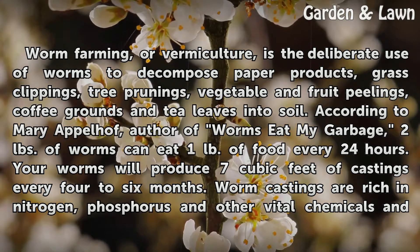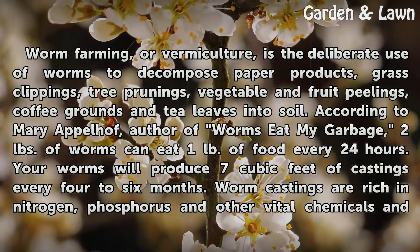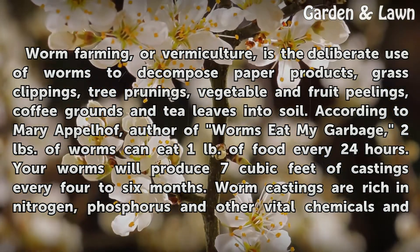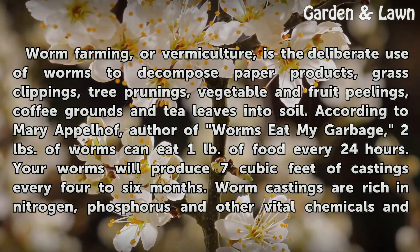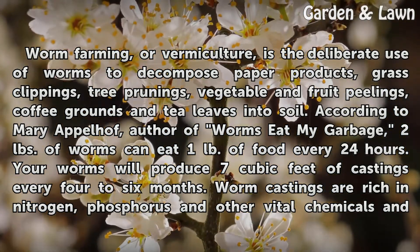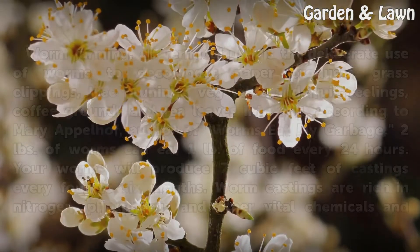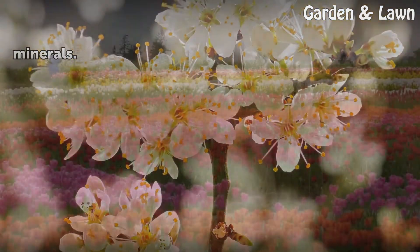Your worms will produce seven cubic feet of castings every four to six months. Worm castings are rich in nitrogen, phosphorus, and other vital chemicals and minerals.